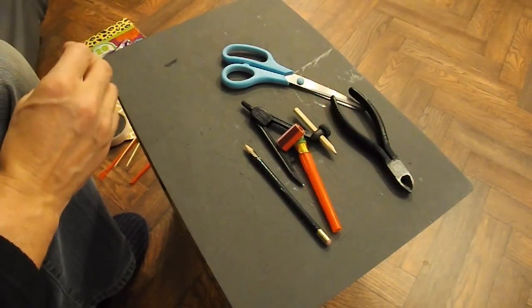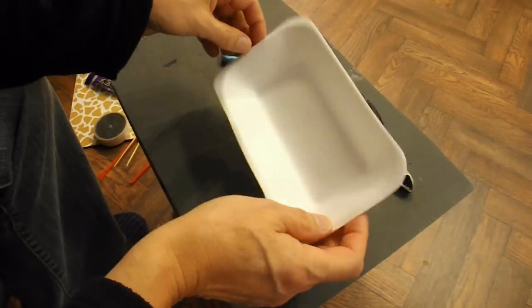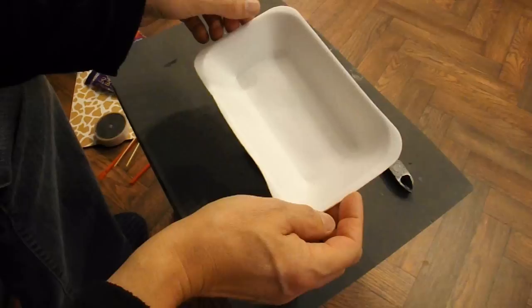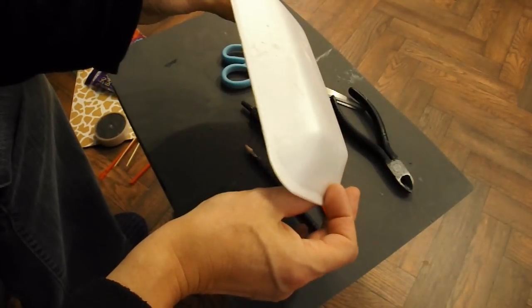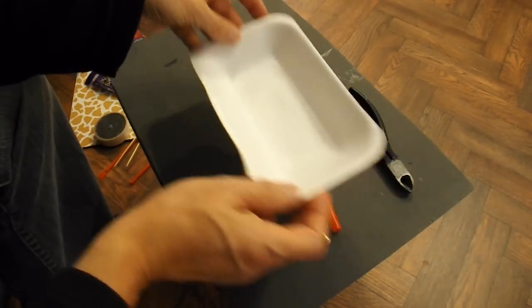And for the body, you could make a cardboard body. But I've just had some potato chips for dinner, and they came in this styrofoam tray. So I'm going to use that as the body.